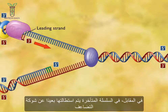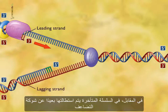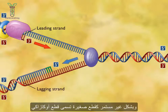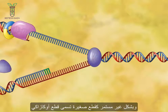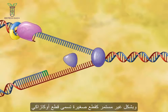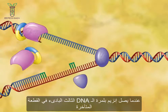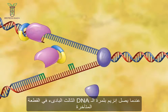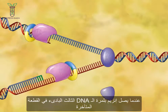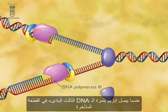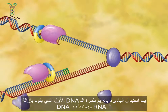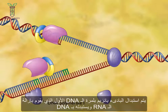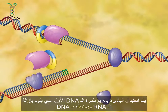In contrast, the lagging strand, which elongates away from the replication fork, is synthesized discontinuously as a series of short segments called Okazaki fragments. When DNA polymerase 3 reaches the RNA primer on the lagging strand, it is replaced by DNA polymerase 1, which removes the RNA and replaces it with DNA.